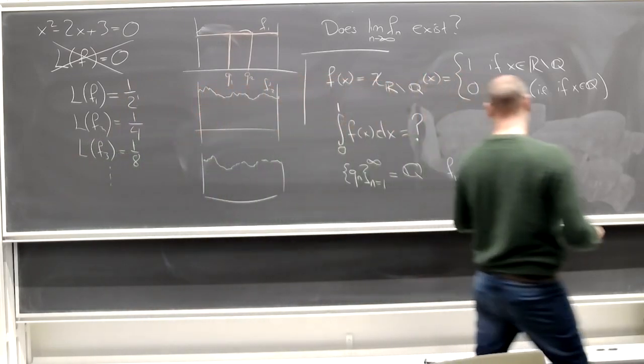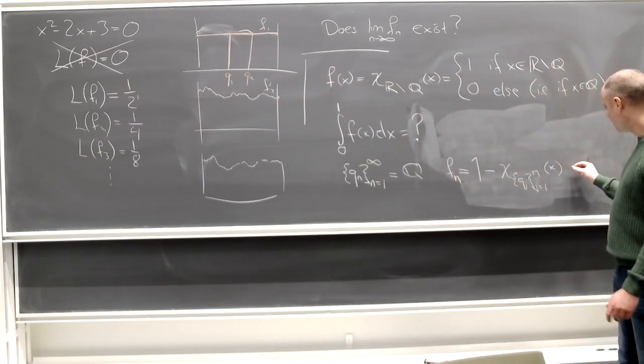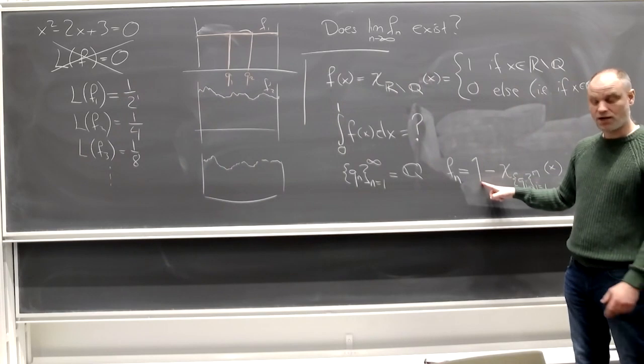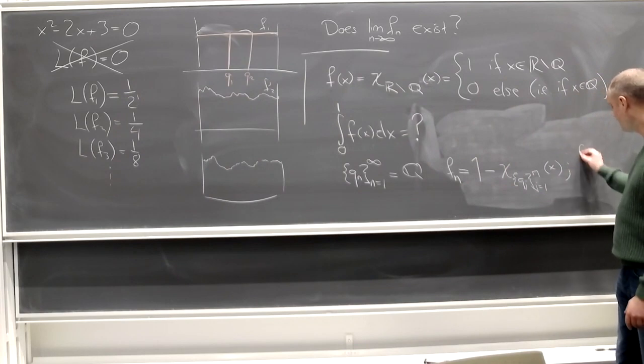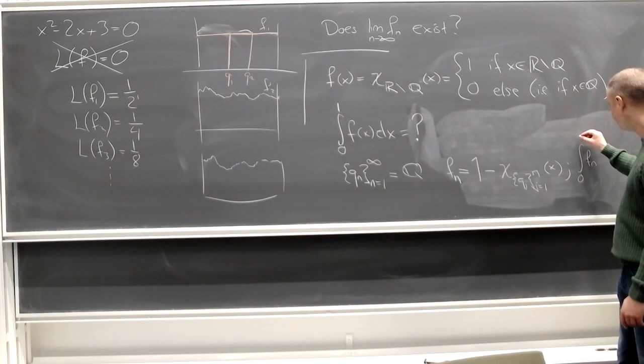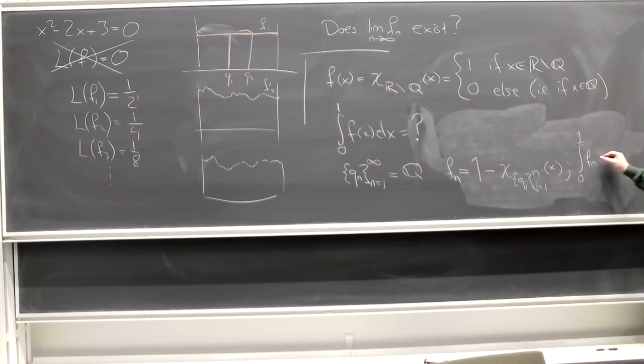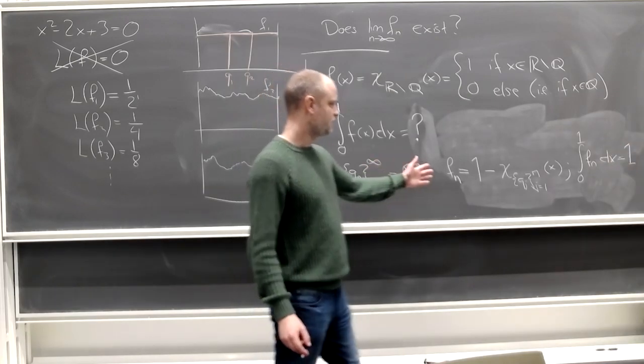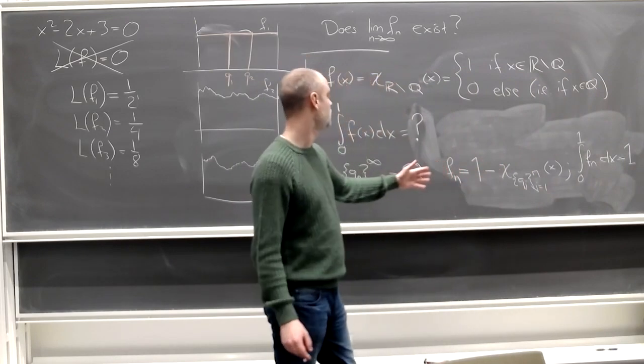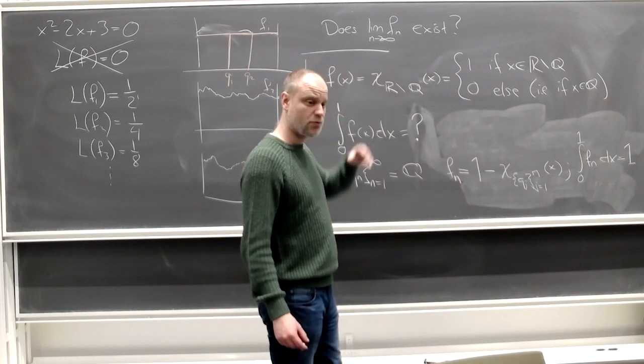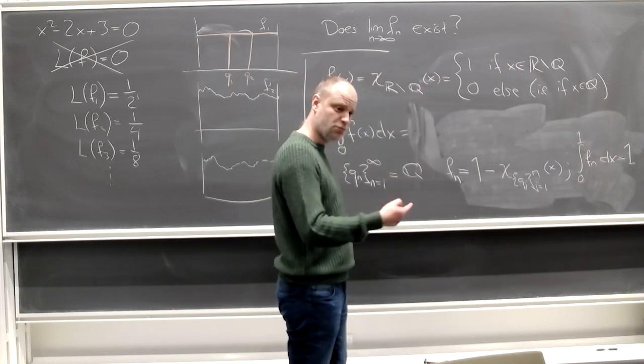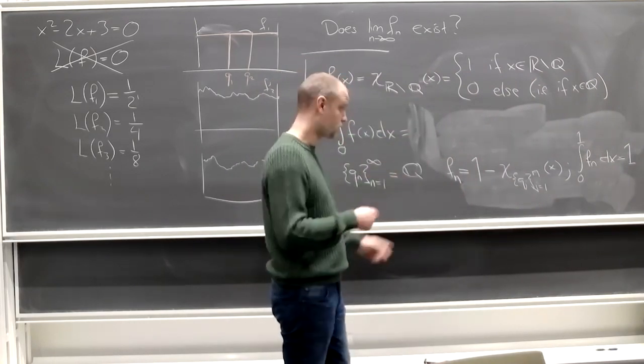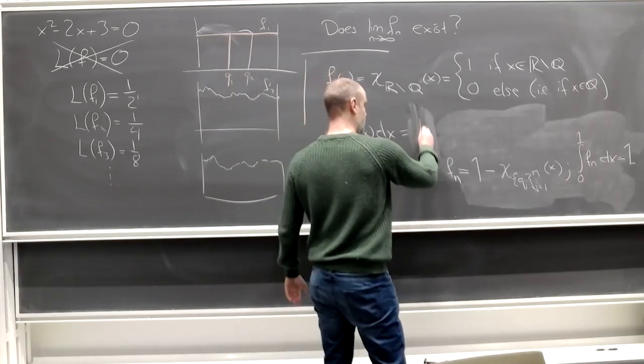Since the integral of the function 1 between 0 and 1 is 1, it should be easy to agree that the integral of fn between 0 and 1 dx equals 1. And clearly, if I do the limit of this process, I'm getting this function. So if we want any sort of order here, this integral needs to be the limit of the integrals of these guys. So we get the answer 1.